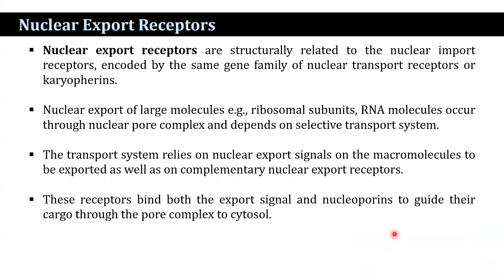The nuclear export receptors are structurally related to nuclear import receptors and are encoded by the same gene family of nuclear transport receptors, known as karyopherins. Nuclear export of large molecules such as ribosomal subunits and RNA molecules occurs through the nuclear pore complex and depends on a selective transport system. This system relies on nuclear export signals on the macromolecules to be exported, as well as complementary nuclear export receptors, which bind both the export signal and nucleoporins to guide their cargo through the pore complex to the cytosol.